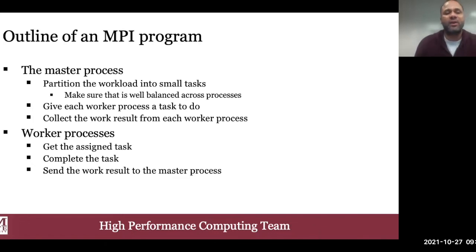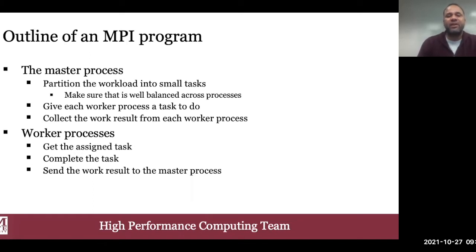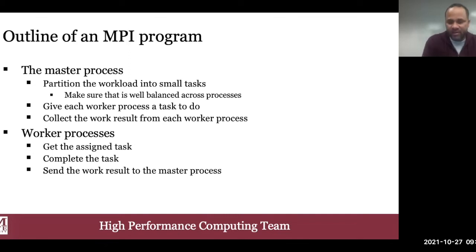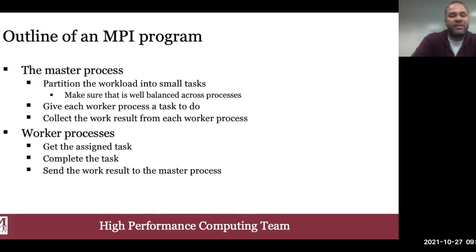Now let's discuss the basic outline of any MPI program. Every MPI program needs at least one master process and one or several worker processes. The master process is responsible for partitioning a big task into smaller subtasks and fairly distributing those subtasks across the network to the worker processes. The worker process, on the other hand, is responsible for receiving the task assigned to it by the master, working on its task, and sending the result back to the master process, which collects all results, combines the solution, and terminates the parallel job when complete.